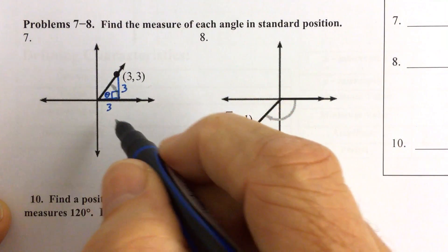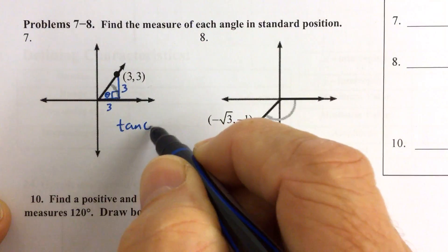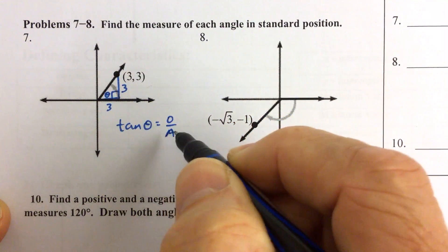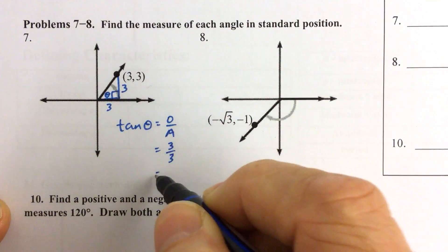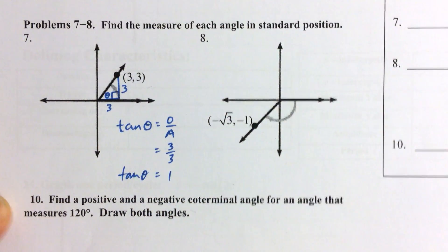And we know that using SOHCAHTOA, the tangent of any angle is equal to the opposite leg over the adjacent leg. And the opposite leg is 3, and the adjacent leg is 3. So the tangent of the angle is equal to 1.